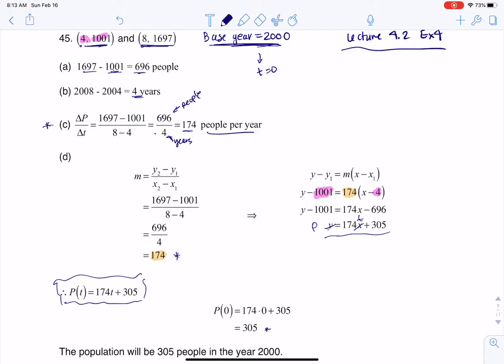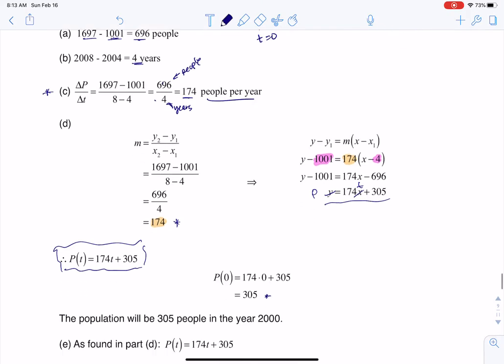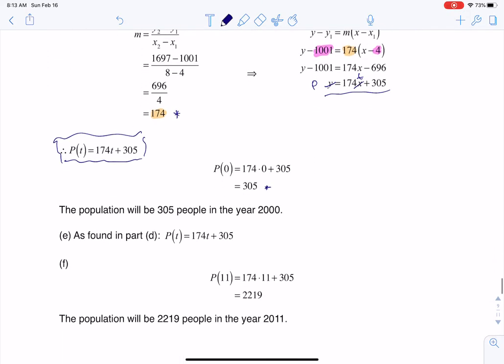That's how many people were in this school in the year 2000. Part E kind of goes out of order because it says find the linear function. Well, you have to find the linear function in Part D to answer the question in Part D, so really, this is Part E. I always think they should ask that in the other order, but what are you going to do?